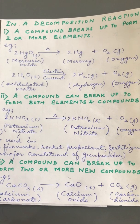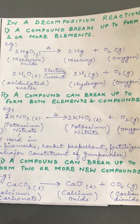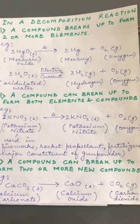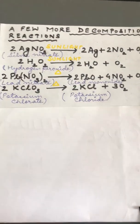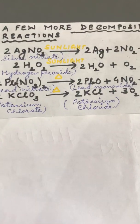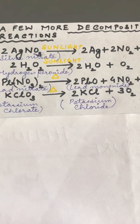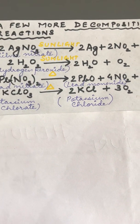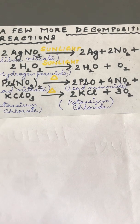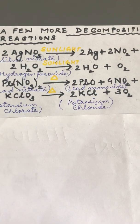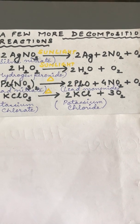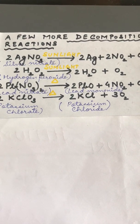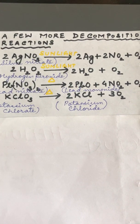When calcium carbonate is heated, it forms quicklime — calcium oxide CaO — plus carbon dioxide, a colorless and odorless gas. Now, silver nitrate, which is a salt and also a reagent, in the presence of light decomposes to form silver, nitrogen dioxide, and oxygen. Hydrogen peroxide in the presence of light decomposes to form water and oxygen.